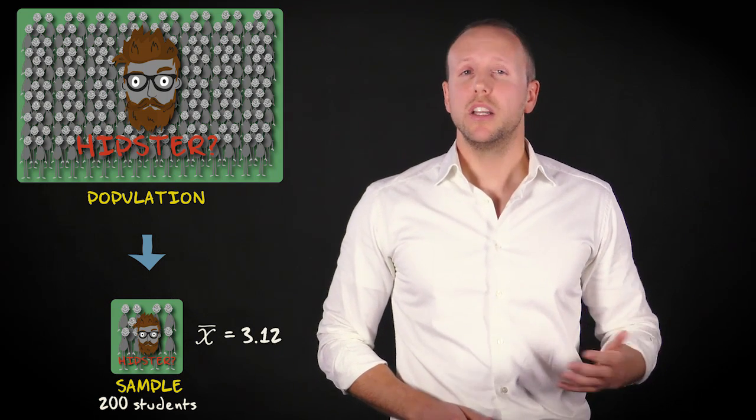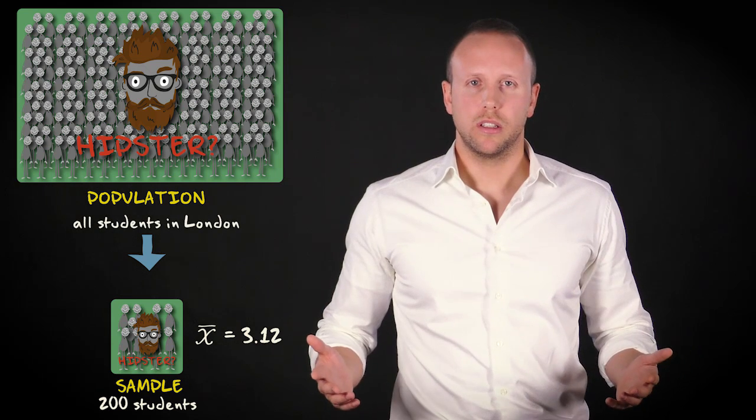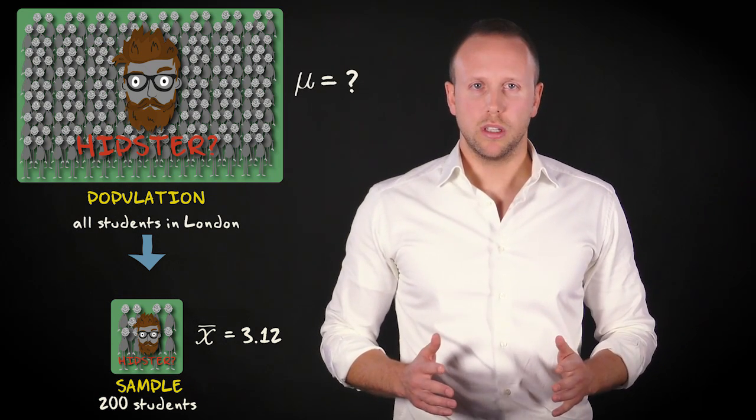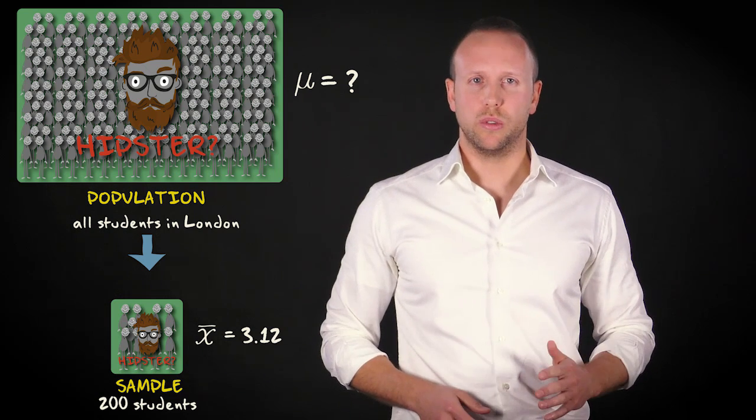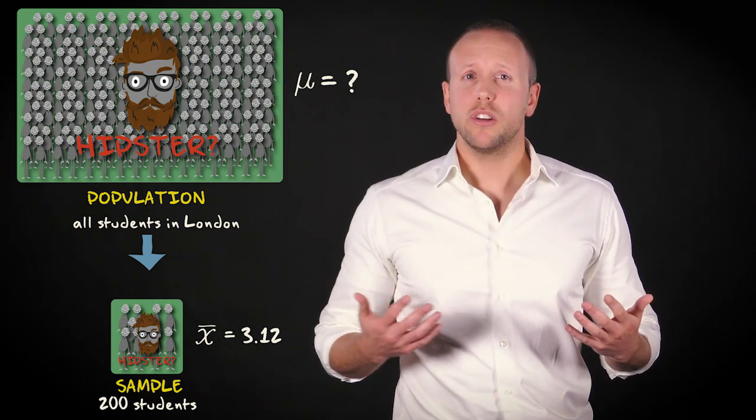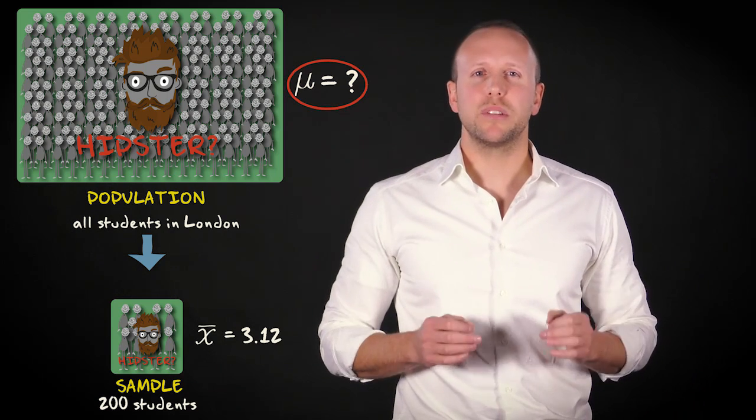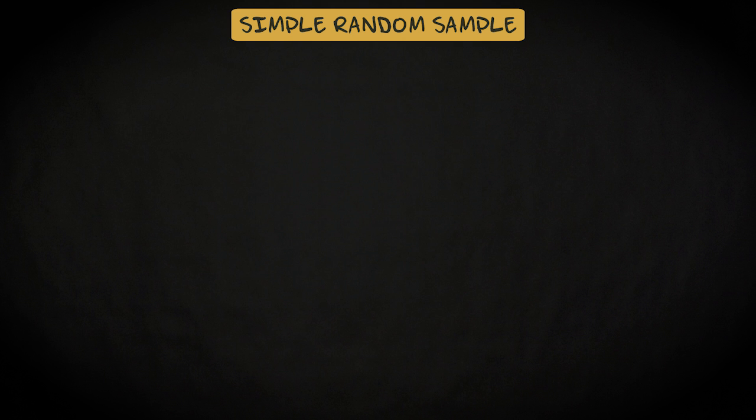The population here consists of all students in London. The parameter you are interested in is the population mean mu. The sample consists of the 200 selected students. The statistic you are going to use to draw a conclusion about the population mean mu is the sample statistic x bar. In order to be able to draw conclusions about the population, we want the sample to be a simple random sample. That means that every student in London must have the same chance of being selected.